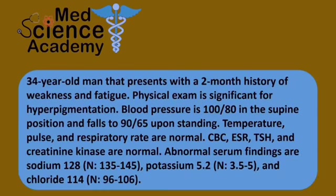So we have a 34 year old man that presents with a two month history of weakness and fatigue. Physical exam is significant for hyperpigmentation. Blood pressure is 100 over 80 in the supine position and falls to 90 over 65 upon standing. Temperature, pulse and respiratory rate are normal. CBC, ESR, TSH and creatinine kinase are normal.